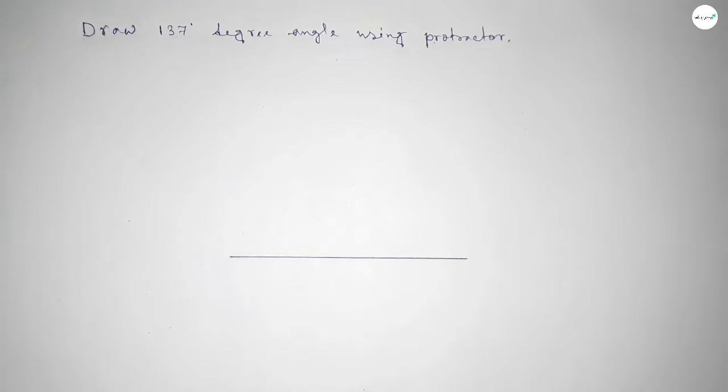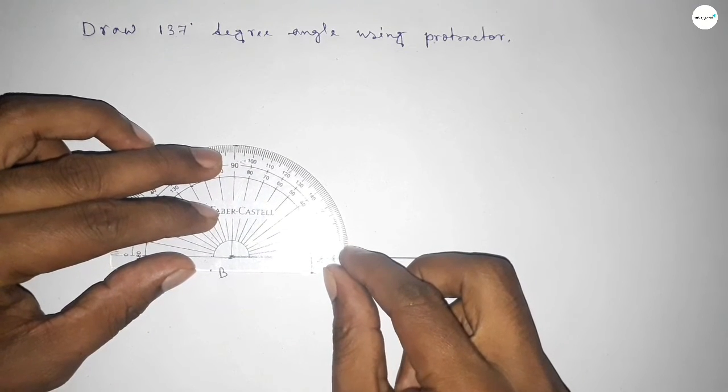So first drawing here a line. Next, taking here point B and here point C. Now putting the protractor on the point B perfectly.